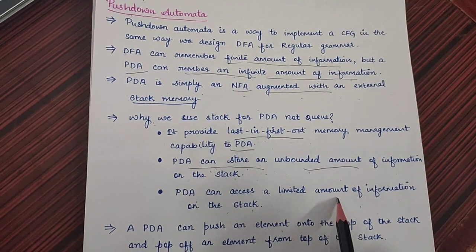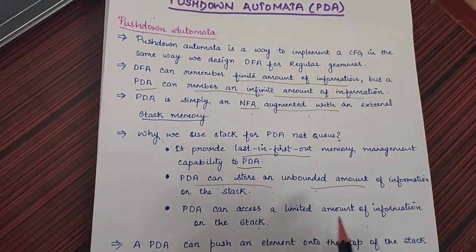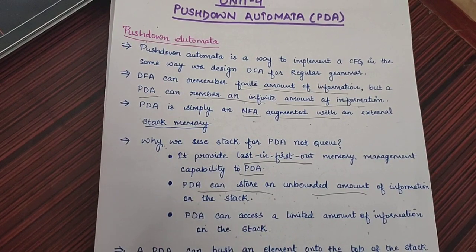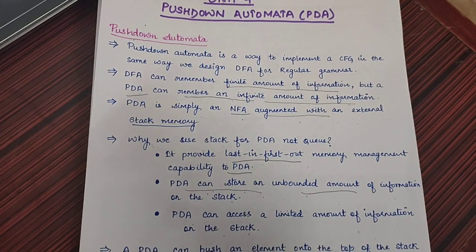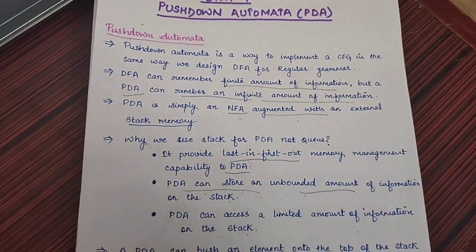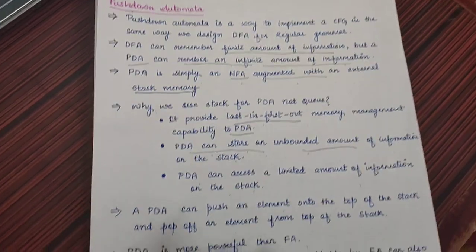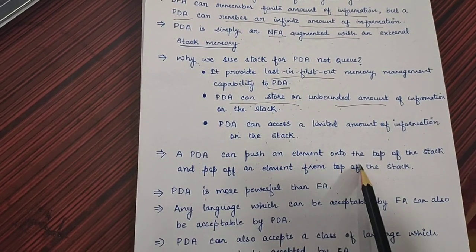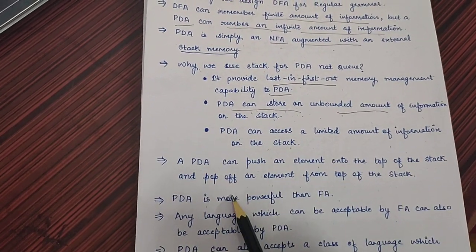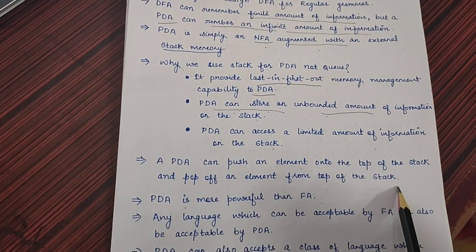It can access a limited amount of information on the stack because we can only insert or delete elements at the top of the stack. That's why it has only one element accessible, not any other one. A pushdown automata can push an element on the top of stack and also pop off an element from the top of the stack.